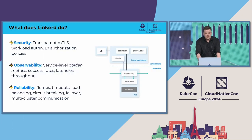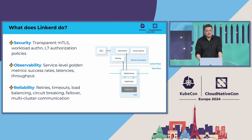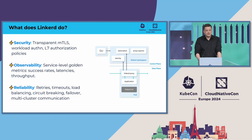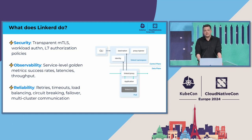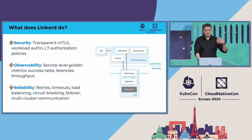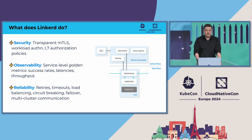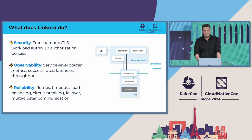I use Linkerd, a service mesh, as the example here. Linkerd has been around for eight-plus years. It does transparent MTLS for your workloads. It has policy, so you can use it to safeguard your services amongst each other. You get observability, reliability features, retries, gRPC load balancing — all these kinds of things.